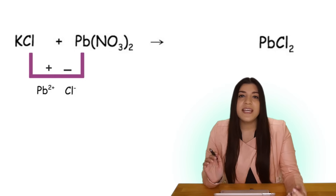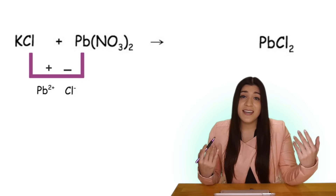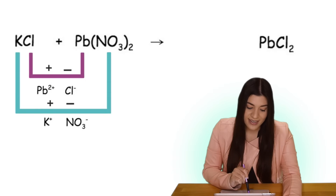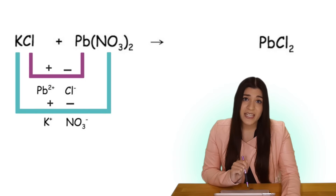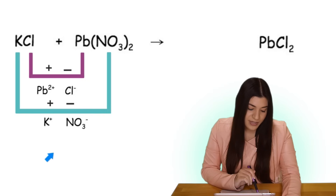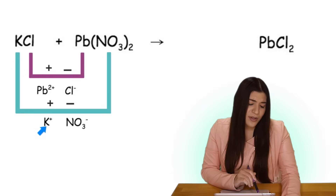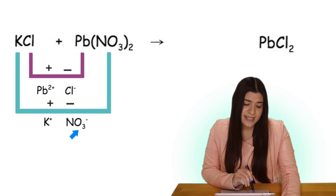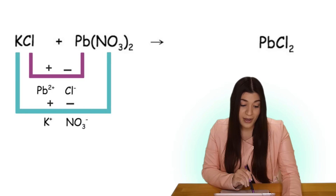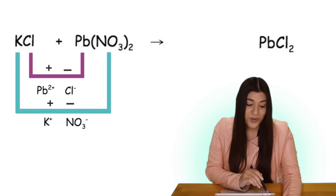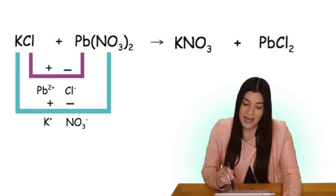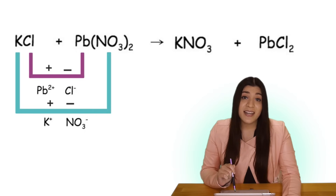Next we're going to do the outer with the outer and we'll see that potassium and nitrate will combine. Potassium has a plus one charge, nitrate has a negative one charge, and our charges are completely balanced, so our next product would be potassium nitrate.